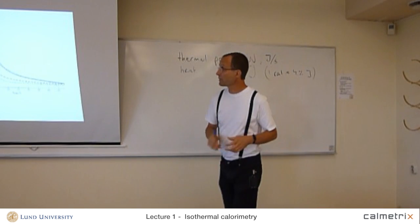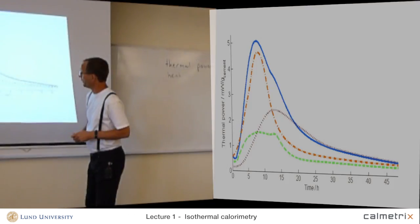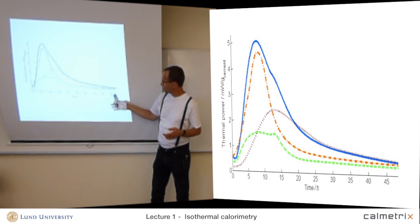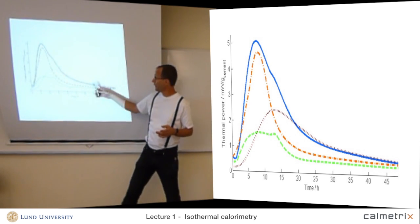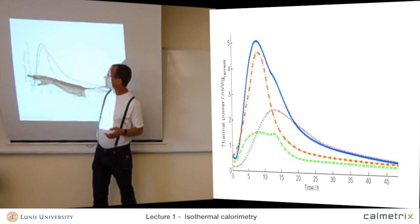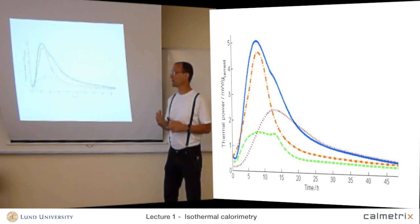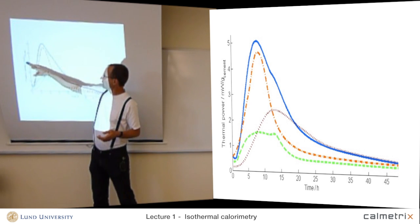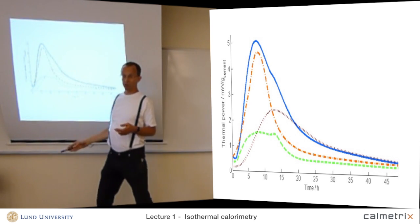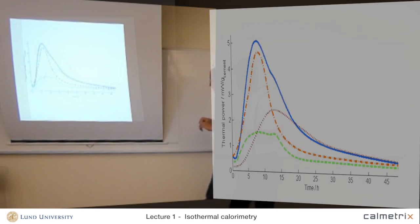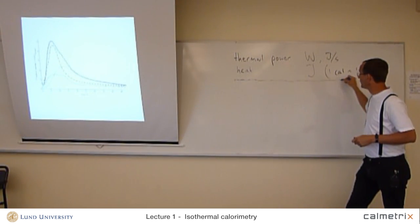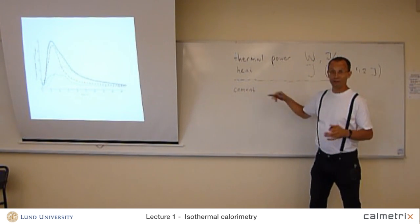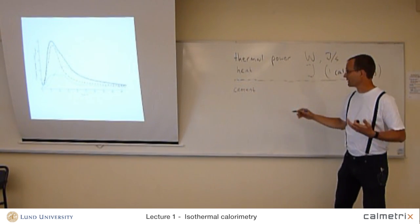I would like to show you an example of a calorimetric measurement. You see, it is very typical that you have time on the x-axis. In this case, it's hours, almost two days, 48 hours here. And on the y-axis, we have the thermal power. So this is the primary output from the isothermal calorimeter: thermal power as a function of time. In this case, the thermal power is milliwatts per gram cement because this is a cement hydration measurement.